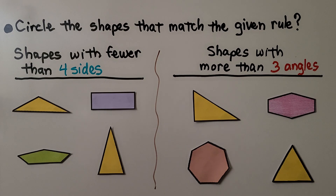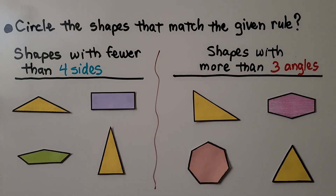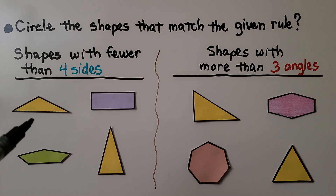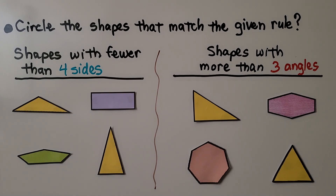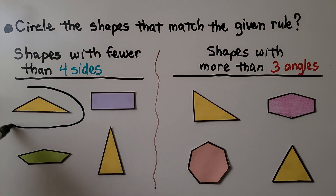This is telling us to circle the shapes that match the given rule. The rule says shapes with fewer than four sides, so we need to circle the shapes that have fewer than four sides — that means less than four sides. Here we have a triangle. It has one, two, three sides. Three is less than four, so this fits the rule.